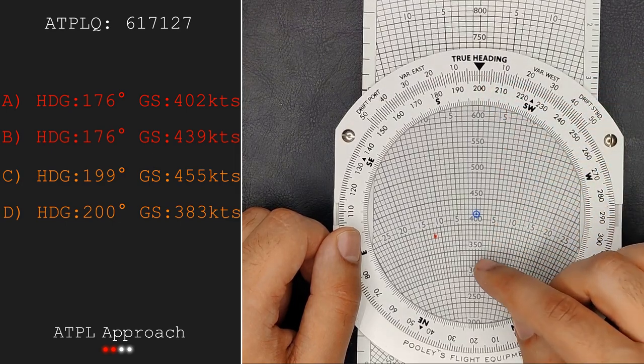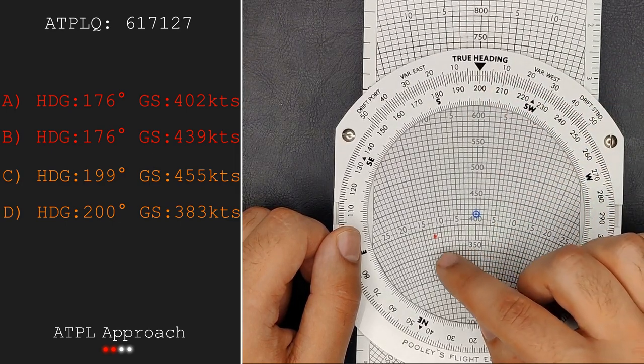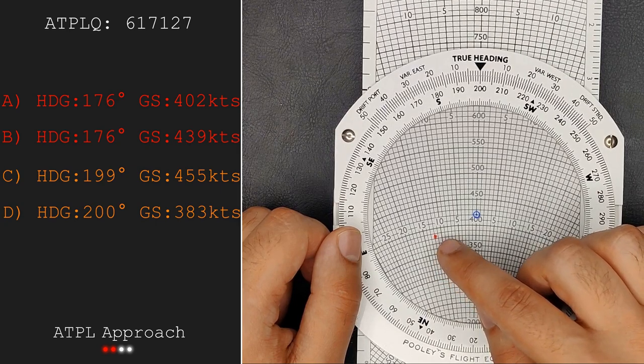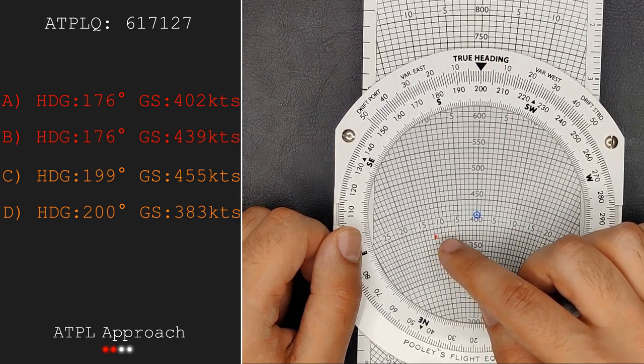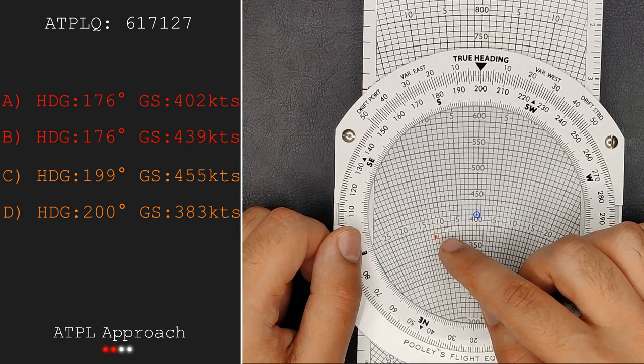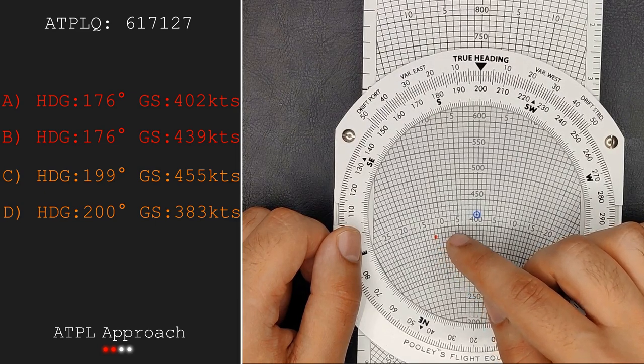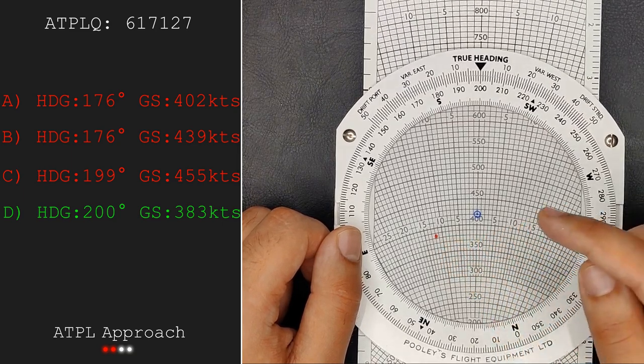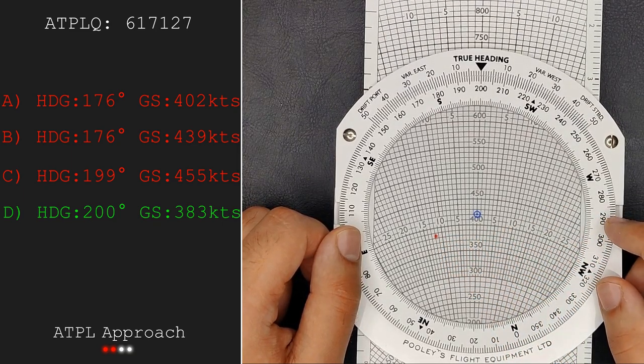We now arrive to the end where we can read it all off. Our heading is 200 degrees and using the speed ox we go from 350, 360, 370, 380 and it's just about halfway between 380 and 390 so I would say 385 knots. The answer in the question says 383 knots but we're close enough.